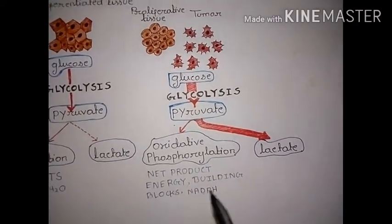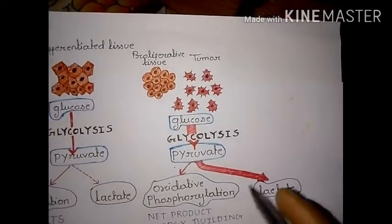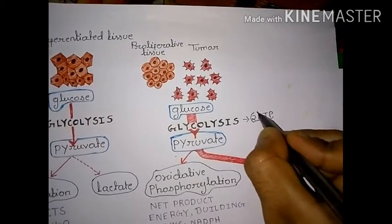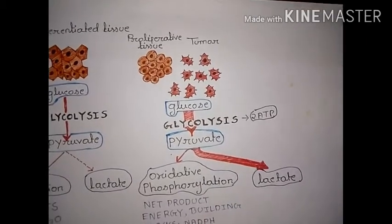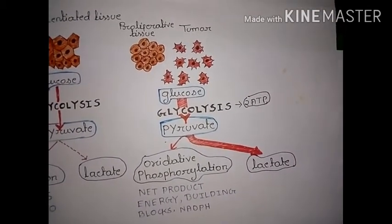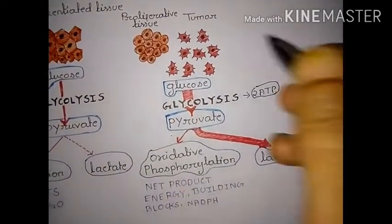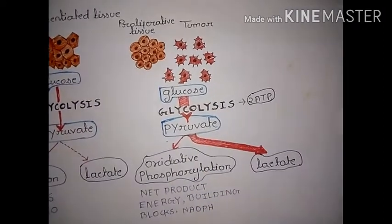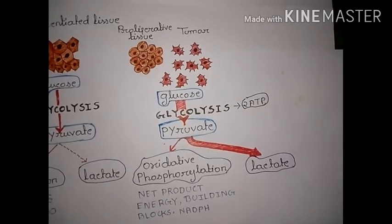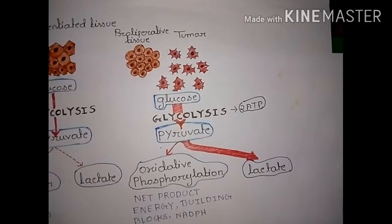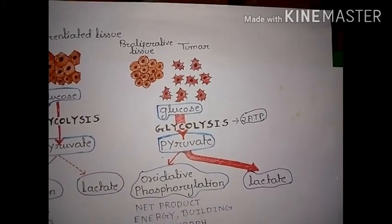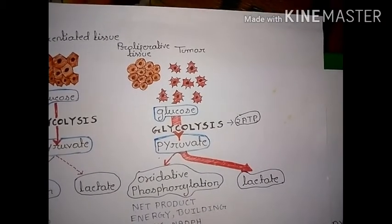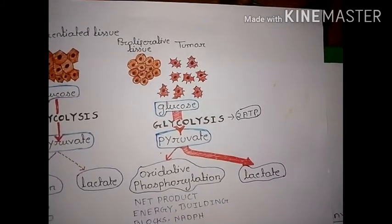Due to the acidic environment, tumor cells survive. A small amount of pyruvate does participate in oxidative phosphorylation, and the net products include energy and building blocks. Because during glycolysis only two ATP are formed, which is not enough for tumor cell growth, the tumor cell compensates by acquiring a large quantity of glucose. That is why tumor cells uptake a large amount of glucose — because oxidative phosphorylation is less frequent, they depend on glycolysis for ATP production.